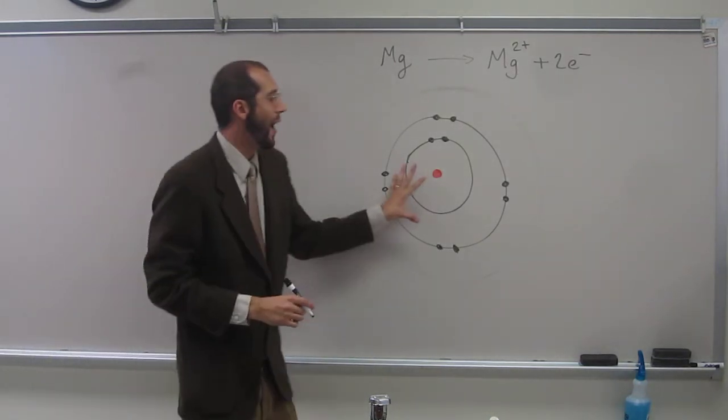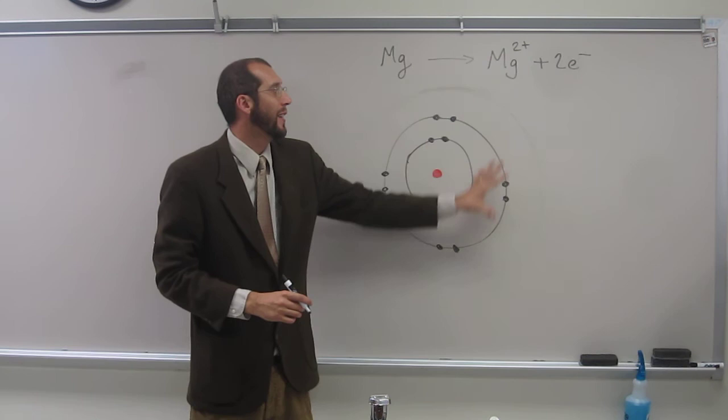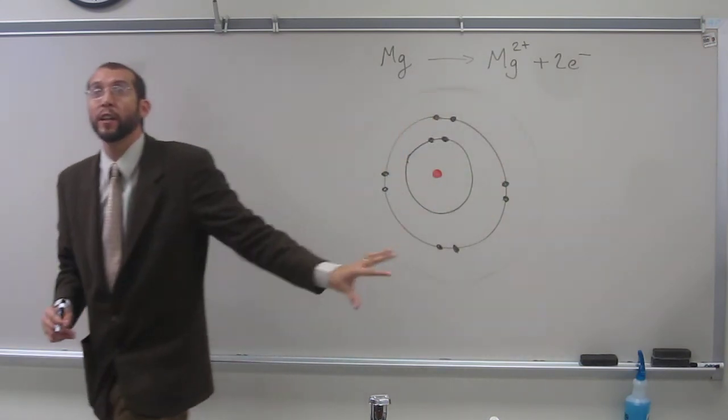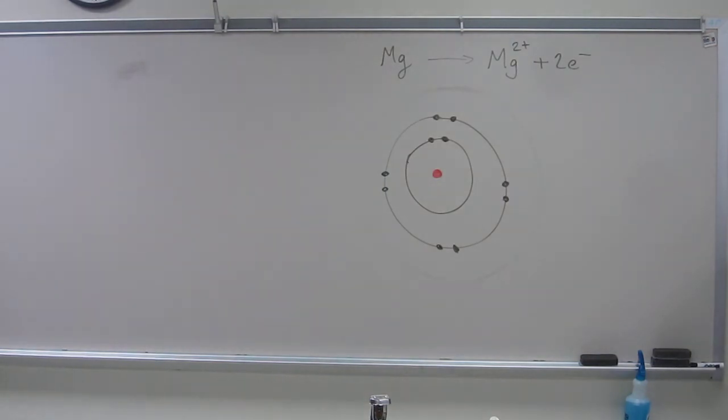Okay, so now, is magnesium two plus, is magnesium without those two electrons very stable? Yes, it is. Why is it stable? It's stable as neon. Well, it's got the neon electron configuration, but even more specifically, it's got a filled valence shell, right?